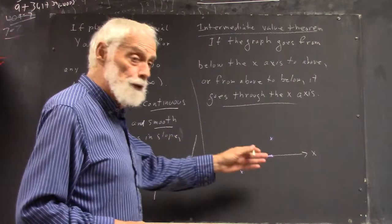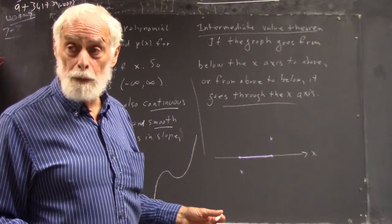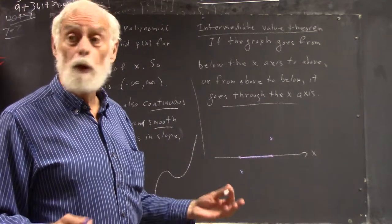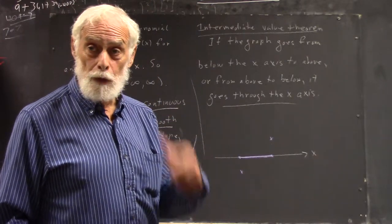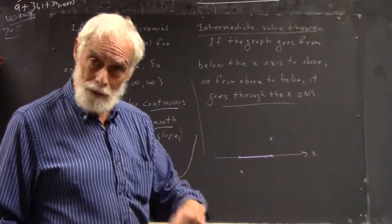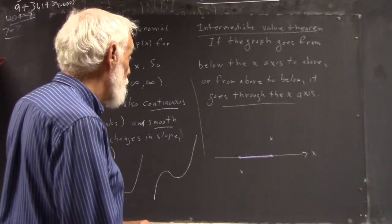Well, this tells us that there's a zero in the purple interval. It might be more than one. You know, the graph might wiggle around several times before it goes back up there. You don't want sawtooth because that'd be sharp corners but it smoothly wiggles. Does that make sense?